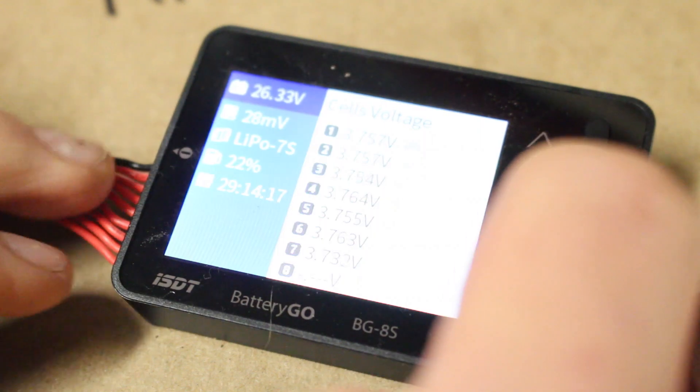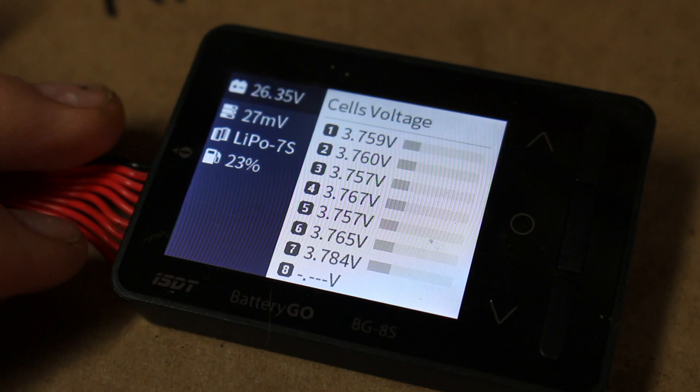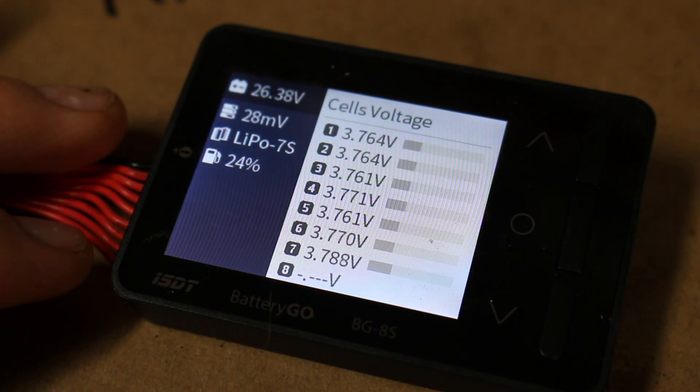One thing I like a lot about this unit is it does have a low voltage alarm which you can set. So if any of the cells get down to that voltage, it'll beep and let you know.